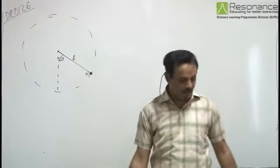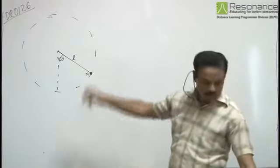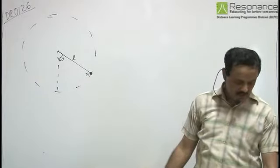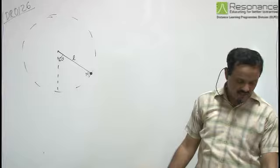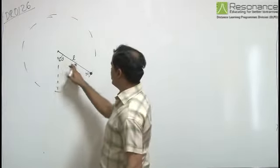the mass of the block to be m, which can rotate about its clamped other end in a vertical circle. Initially, the rod is made at an angle of 60 degrees with the vertical.